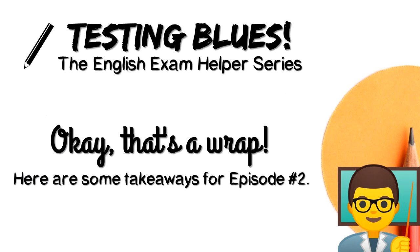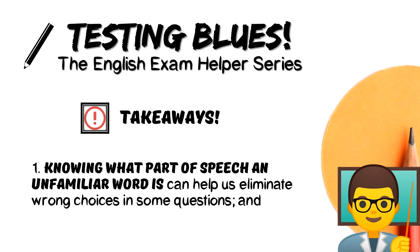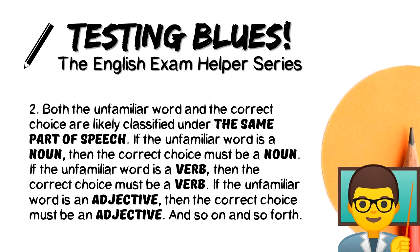Okay, that's a wrap. Here are some takeaways for episode number two. Number one: knowing what part of speech an unfamiliar word is can help us eliminate wrong choices in some questions. Number two: both the unfamiliar word and the correct choice are likely classified under the same part of speech. If the unfamiliar word is a noun, then the correct choice must be a noun. If the unfamiliar word is a verb, then the correct choice must be a verb. If the unfamiliar word is an adjective, then the correct choice must be an adjective. And so on and so forth.